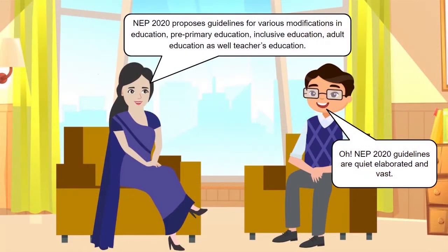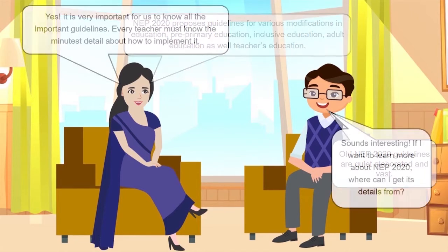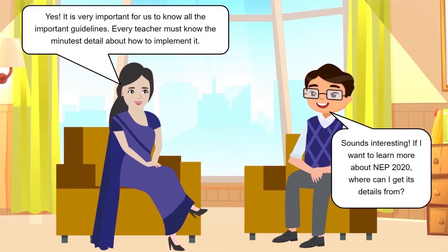NEP 2020 proposes guidelines for various modifications in education — pre-primary education, inclusive education, adult education, as well as teachers' education. NEP 2020 guidelines are quite elaborated and vast. It is very important for us to know all the important guidelines. Every teacher must know the minutest detail about how to implement it. If I want to learn more about NEP 2020, where can I get its details from?